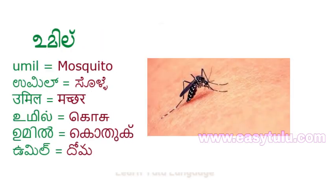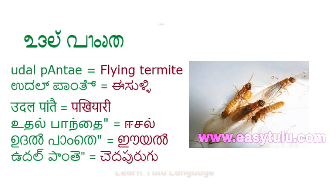Umiilu means Mosquito. Udal Panthe means Flying Termite.